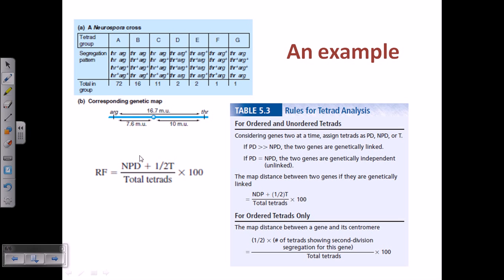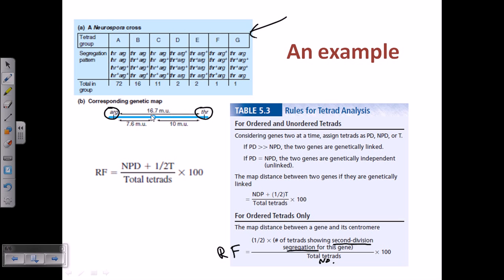The formula to calculate the distance between a gene and its centromere is: recombination frequency = (½ × number of tetrads showing second division segregation) / total number of tetrads × 100. You need to identify which tetrads show second division segregation, then divide by total tetrads. Problems will ask for both the distance between two genes and the distance between a gene and its centromere — both are important and required.